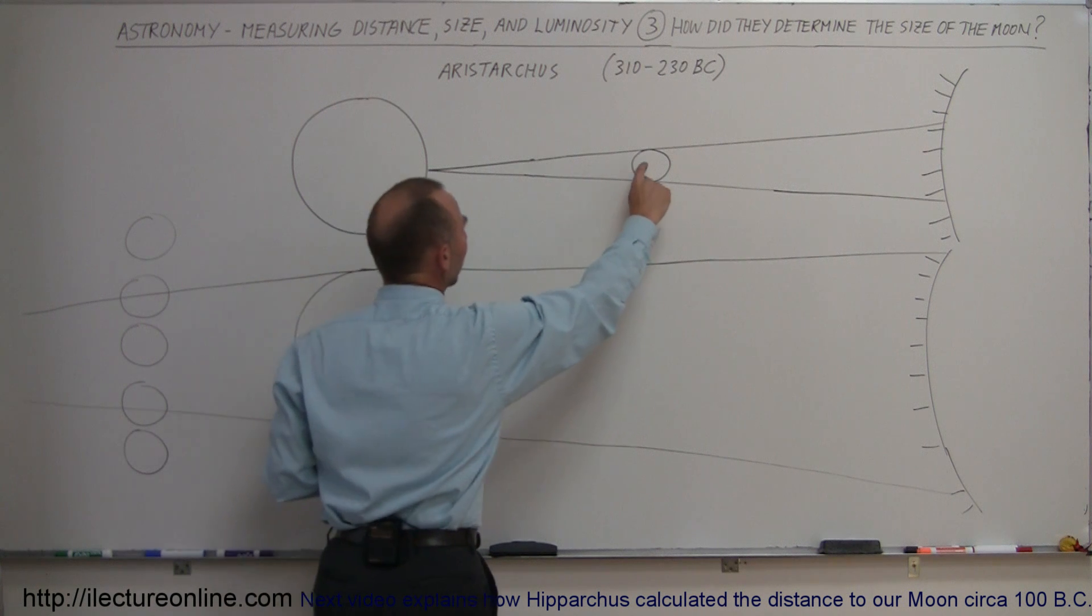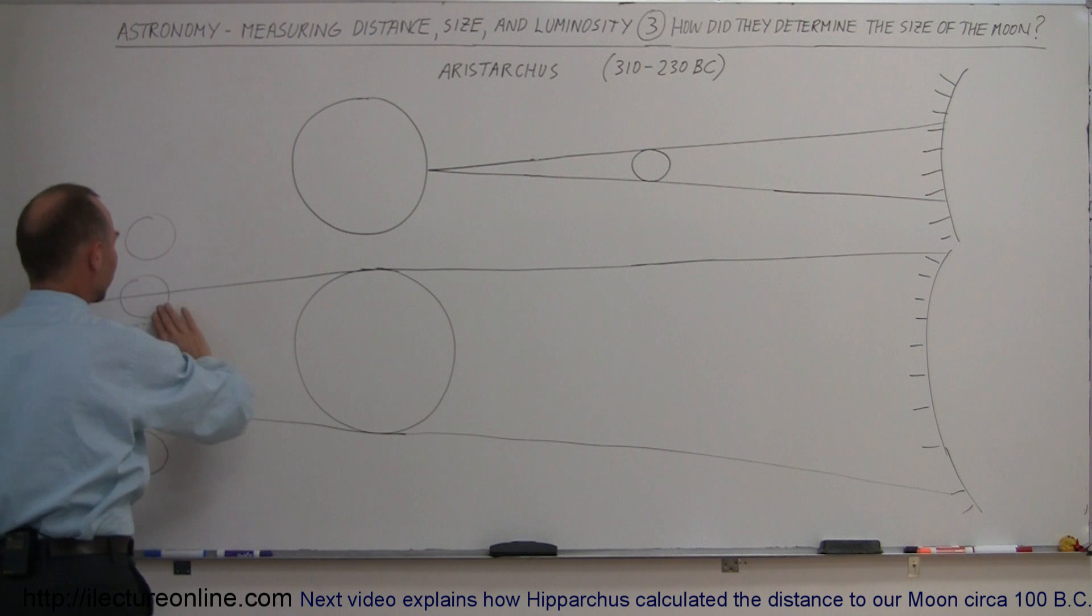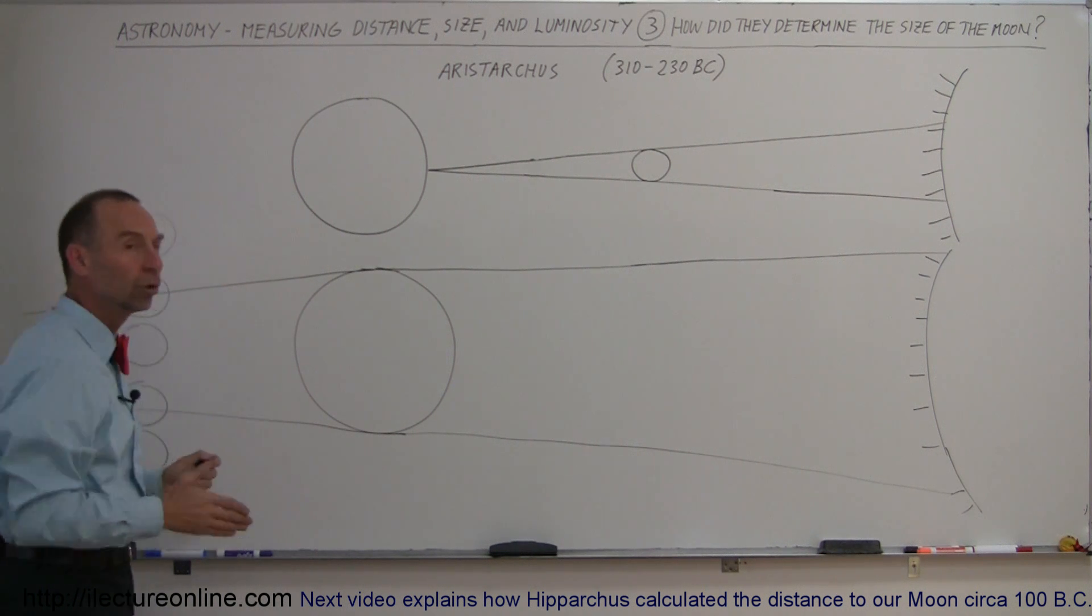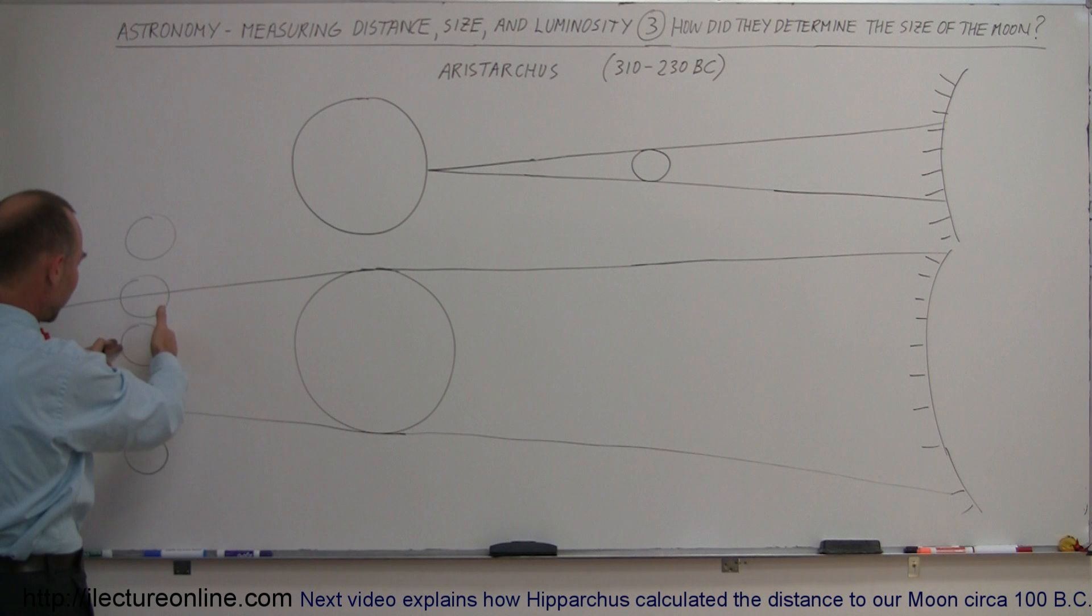So then what they said was, well on the other side of the Earth, once in a while, the Earth blocks the sunlight for the moon, and then we have what we call a total lunar eclipse. But when that happens, we can see the moon slowly disappearing into the shadow of the Earth, staying there for a while, and then eventually reappearing on the other side.